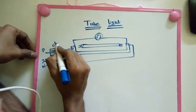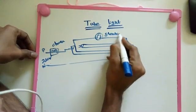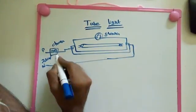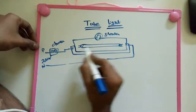This is the choke, this one is the starter. So this is a simple connection of tube light. So what's the purpose of choke and starter? Starter is going to connect temporarily.